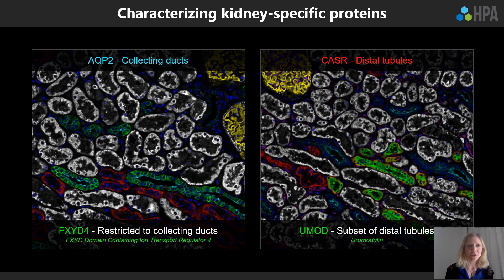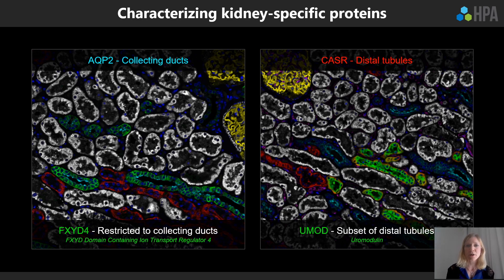Here are examples of two different proteins in kidney mapped using this workflow. First, FXYD4 is expressed in collecting ducts, overlapping with the marker aquaporin2. Second, Uromodulin is expressed in a subset of distal tubules that partly overlaps with CASR, which is expressed in distal tubules.